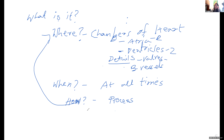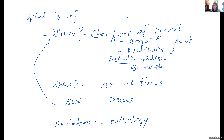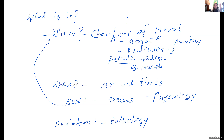Last but not least, you want to learn whether there are any deviations — can there be problems? We'll be talking about some problems like heart murmur. This is where the pathology comes in. So here you have the anatomy, the physiology, and the pathophysiology. Divide each topic into what, where, when, how, and whether there are deviations.